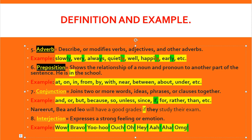Number eight, interjection — expresses a strong feeling or emotion. A clue for interjection is that it has an exclamatory point. If you see words highlighted in green, those are interjections: wow, bravo, yoohoo, ouch, oh, hey, ah, aha, OMG. They have a tone and a feeling when you say the words.